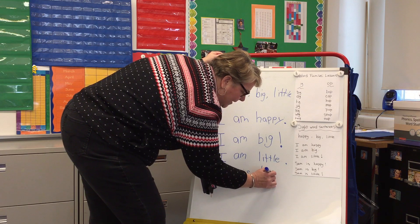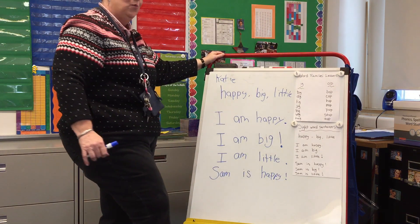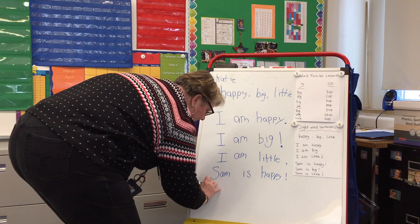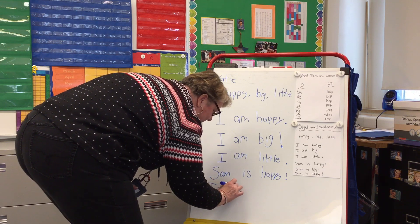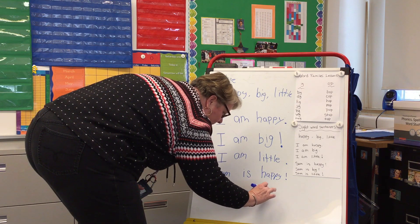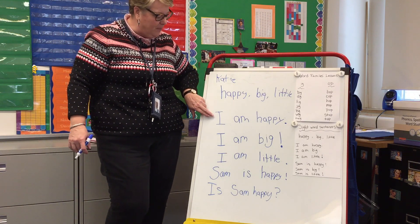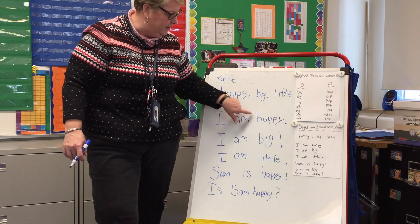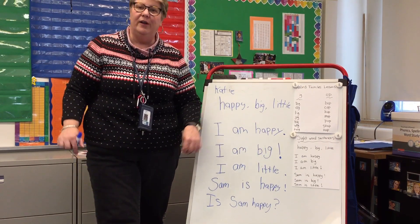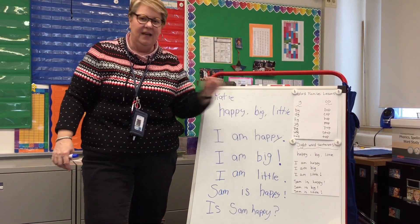And then I'm going to do one with a question mark. I could change this around and say 'Is Sam happy?' So now we have a question mark. Your sentences need three things: an uppercase letter, spaces between the words, and some kind of ending punctuation — a period, or an exclamation point if you want to read it like you're really excited, or a question mark if you're asking a question. Use all three of these words in a sentence.